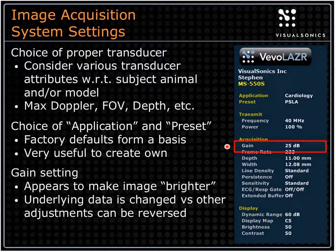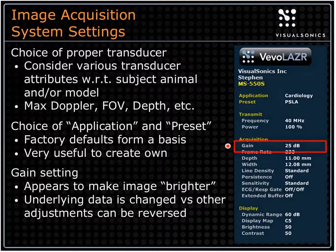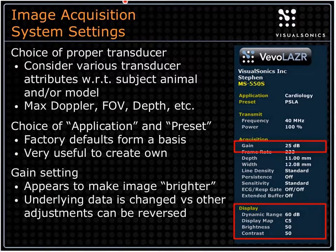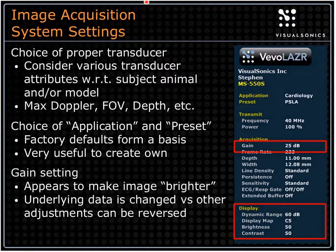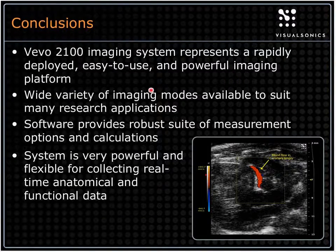The gain settings are very important because they actually change the underlying data on the system. The brightness or darkness of the image can make it more or less challenging to do measurements later on. Other things, like brightness, contrast, dynamic range, and display map on the 2100 specifically, can be changed afterwards. So those are important things to think about when doing acquisitions.